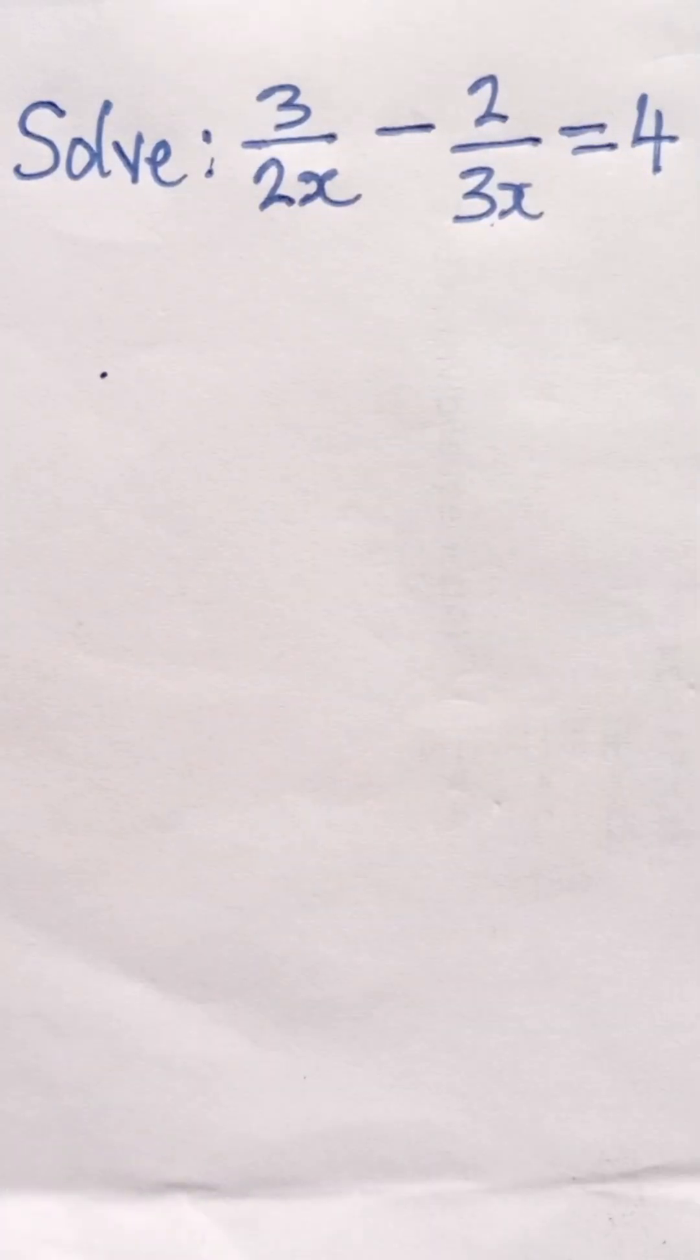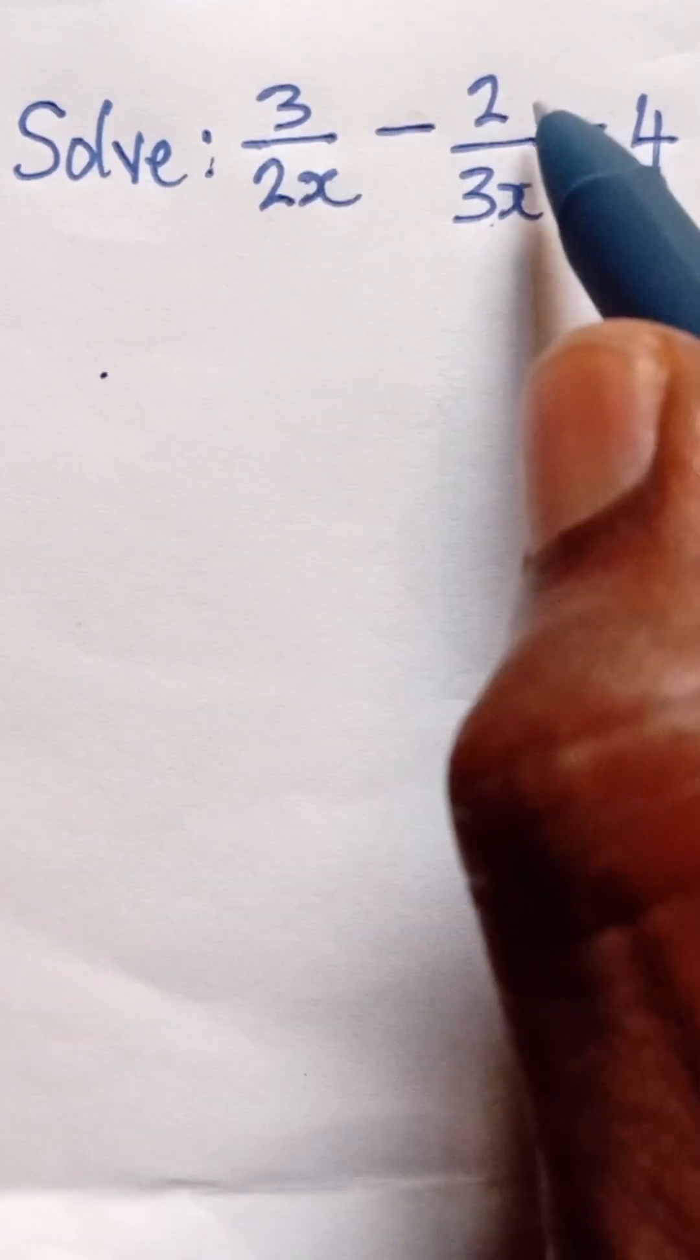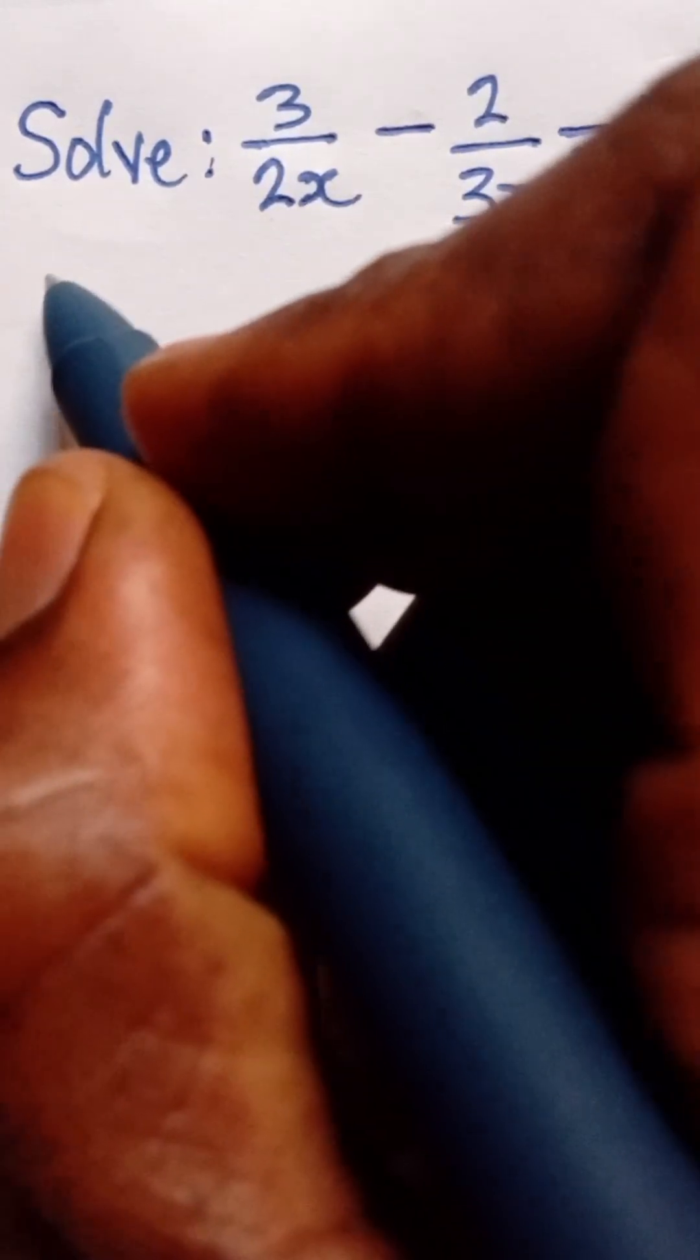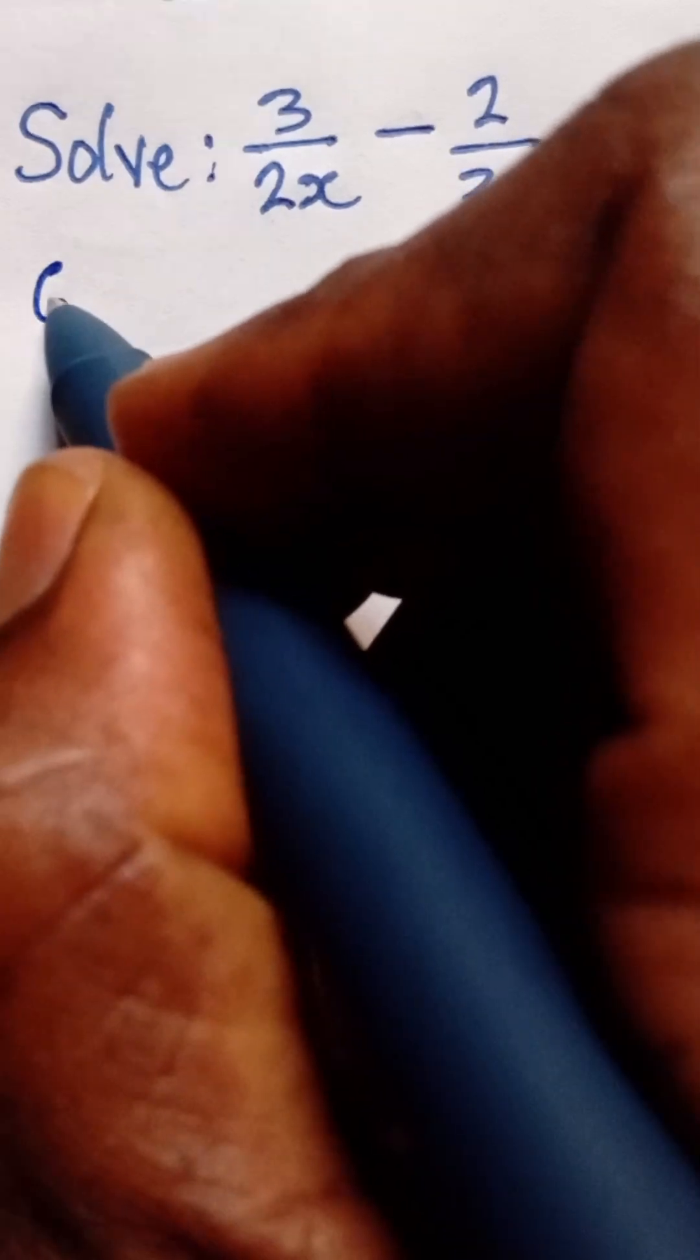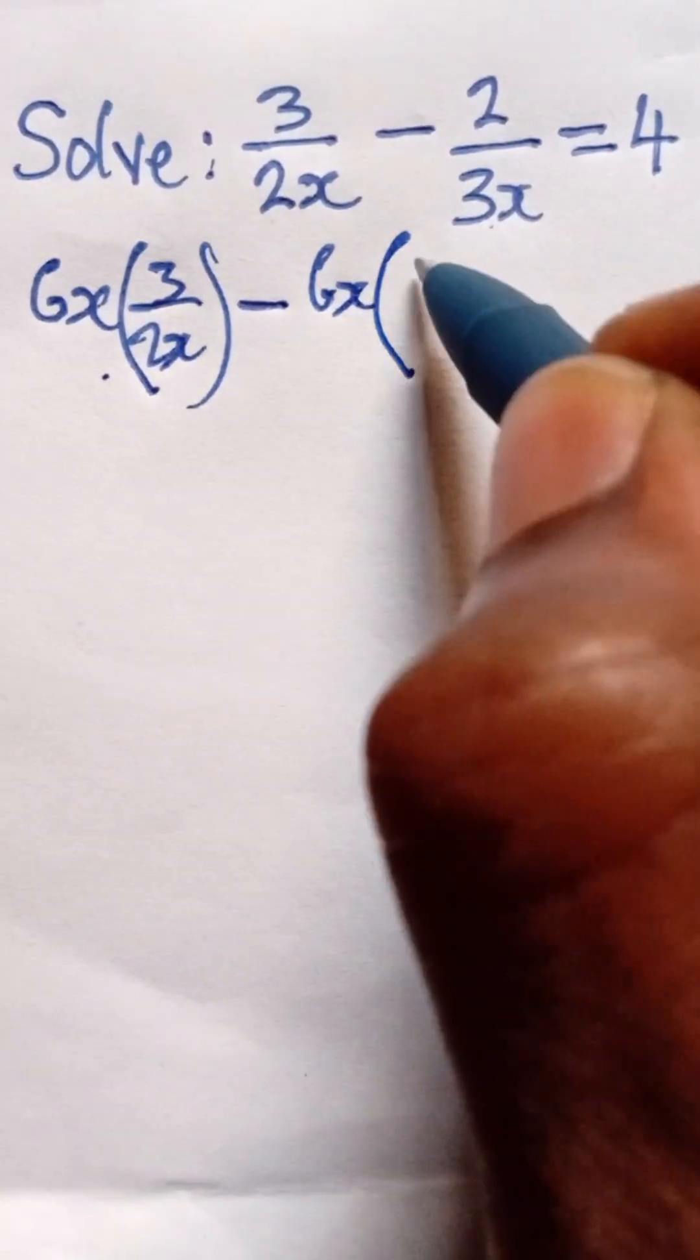and x, so we pick one of the x, so the LCM is going to be 6x. The next thing to do is multiply each of the terms by 6x. So we're using it to multiply the first term, which is 3 over 2x, and then minus 6x multiplied by the